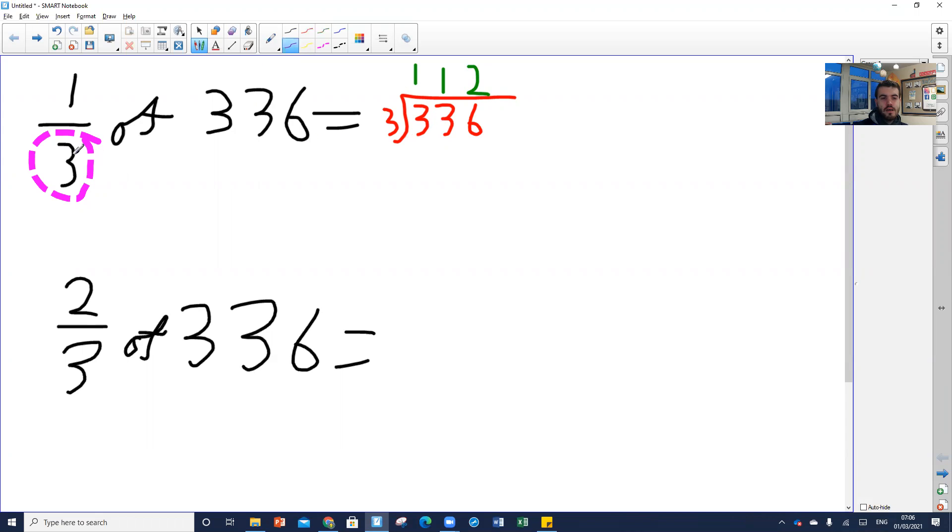We're then going to take our answer and we're going to multiply it by the number at the top. So we're going to take that 112 and we're going to do 112 times by one, which we all know is obviously 112. So the answer is 112. That's one third of 336.